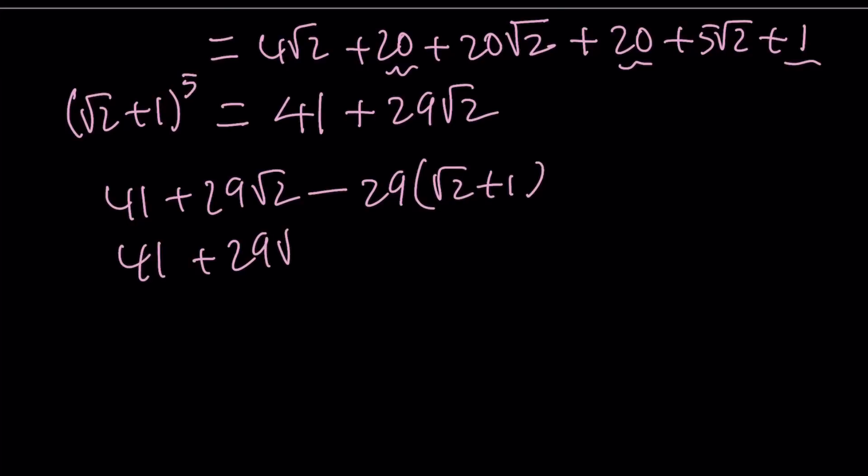41 + 29√2 - 29√2 - 29. There's a reason why 29 was given there, so go ahead and cancel those out. 41 minus 29 is equal to 12. So that will be our answer.